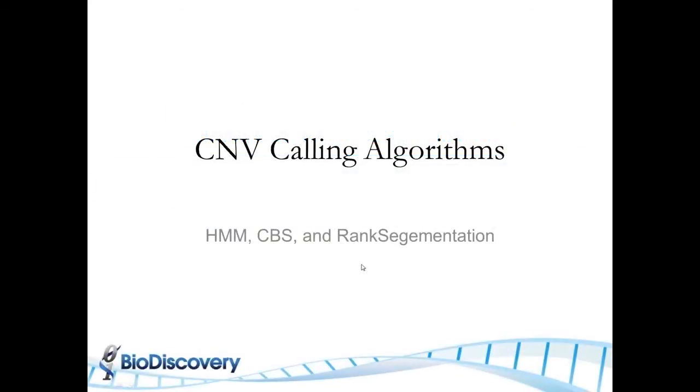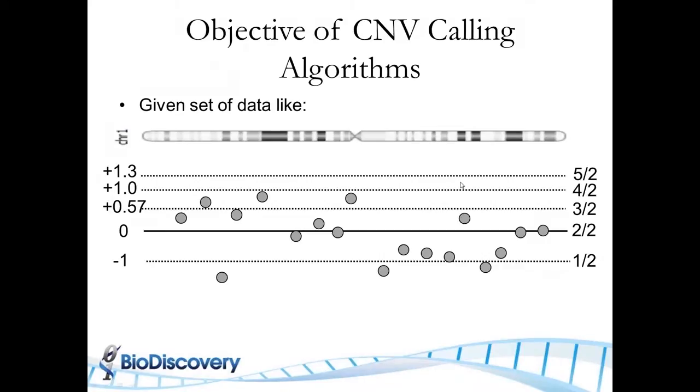VNB calling algorithm, in particular HMM, CBS, and rank segmentation. So what is the objective of the calling algorithm? Basically, once you have a bunch of points like this, what are the regions of the genome that are gained or lost?